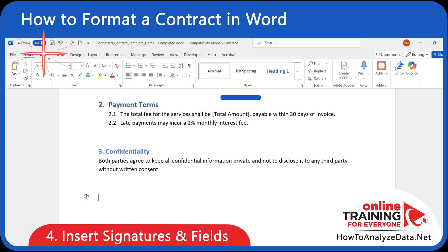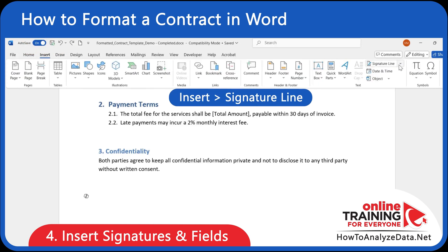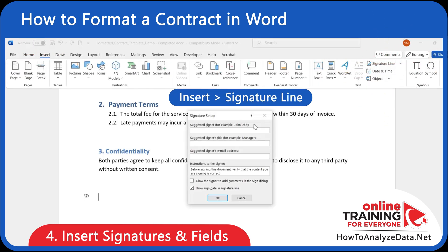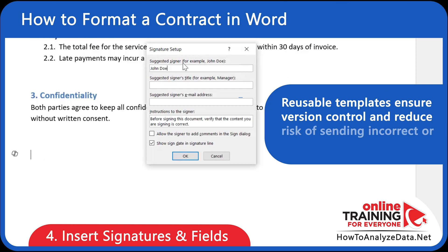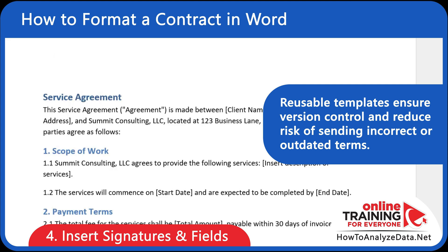Every contract ends with the signature. Use Word's Signature Line feature to insert a professional-looking area for signing. And for documents you plan to reuse, you can make parts of your contract editable with content controls.